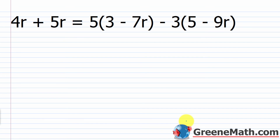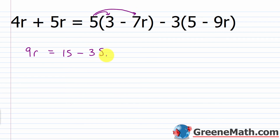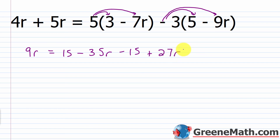Next example: 4R plus 5R equals 5 times the quantity 3 minus 7R, minus 3 times the quantity 5 minus 9R. Simplifying each side: 4R plus 5R is 9R on the left. On the right, distributing: 5 times 3 is 15, minus 5 times 7R is minus 35R; then negative 3 times 5 is minus 15, and negative 3 times negative 9R is plus 27R. Combining: 15 minus 15 is 0, and negative 35R plus 27R is negative 8R. So 9R equals negative 8R.